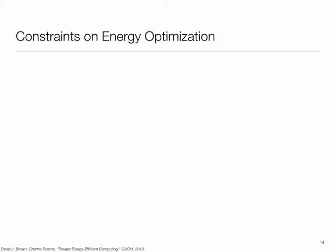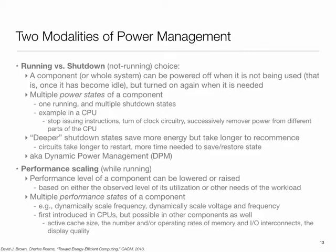Both techniques — DPM and DVFS — are also related to the concept of energy proportionality discussed earlier. Performance scaling alone does not necessarily work, because even at the lowest performance setting, since the CPU is still up, there would be significant baseline power consumption. So to achieve system-level energy proportionality, you typically use a combination of the two: multiple processors are managed, some kept up and some shut down, and for those kept up, you apply performance scaling — all done intelligently to make the overall system, like a rack of servers, act as something energy-proportional.